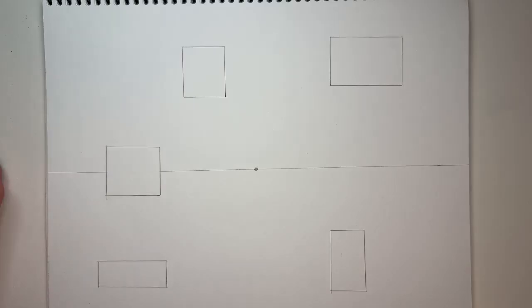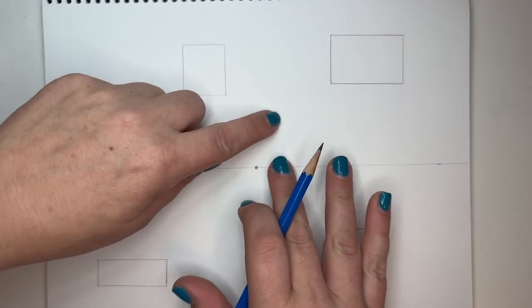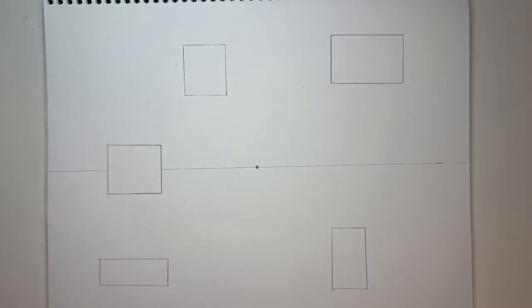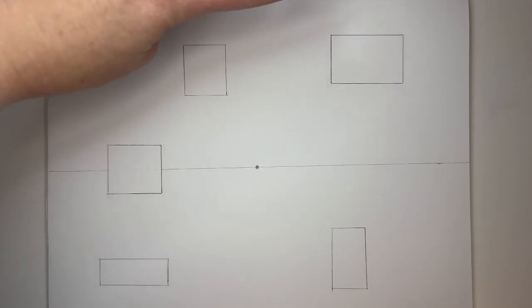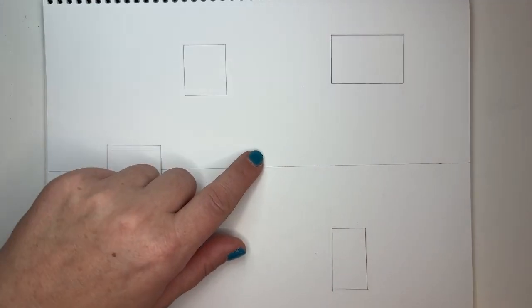All right, so I've got five shapes on here that I can now make look dimensional by drawing converging lines back to this vanishing point. So we're going to use our ruler to do this, and you'll see pretty quickly that many of the boxes you'll draw three converging lines, but some of the boxes you'll only see two.